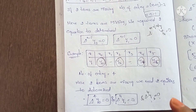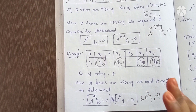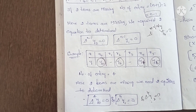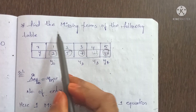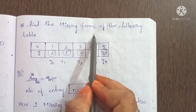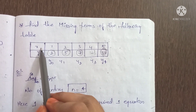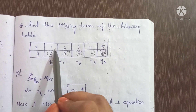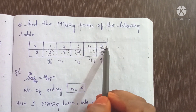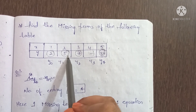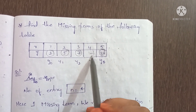Now, with one missing term we have one equation. Find the missing terms of the following table. x values: 1, 2, 3, 4, 5. y values: m, 2, 5, 7, blank, m — and the last value is 32.